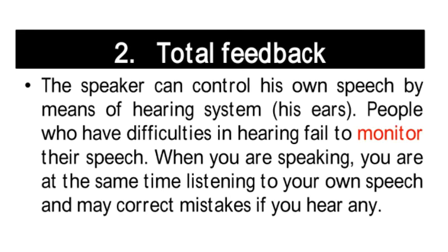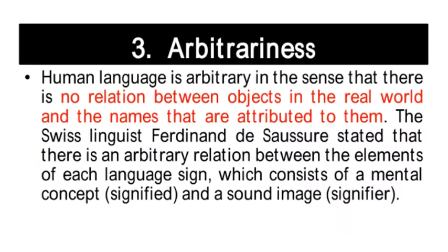Therefore, animals cannot be trained to learn human language. The second property is total feedback. The speaker can control his own speech by means of the hearing system. People with difficulties in hearing fail to monitor their speech. When you are speaking, you are at the same time listening to your own speech and correcting mistakes if you hear any.